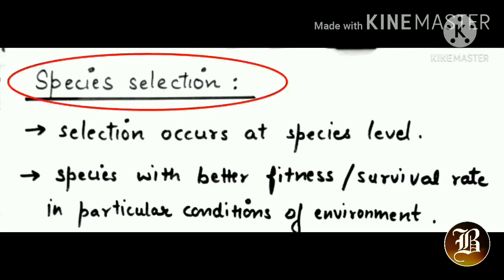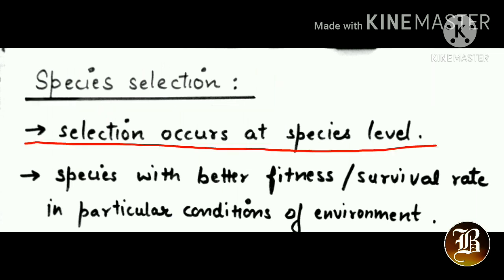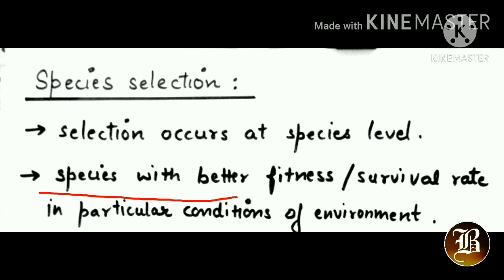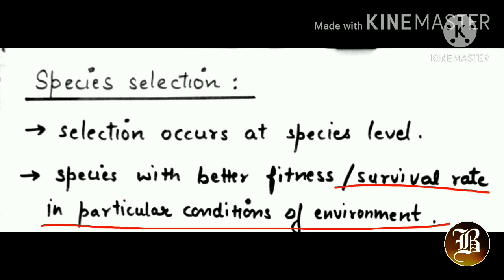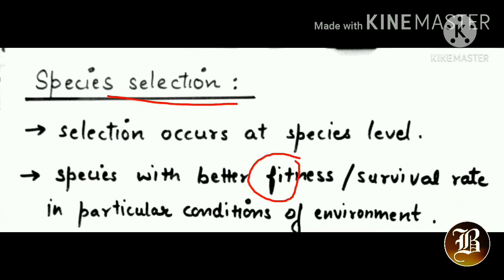The next type of selection is species selection. Here selection occurs at the species level — those species with a better survival rate under particular environmental conditions are selected. Species considered fit will be selected by nature.